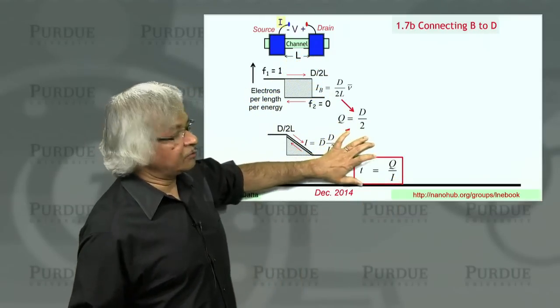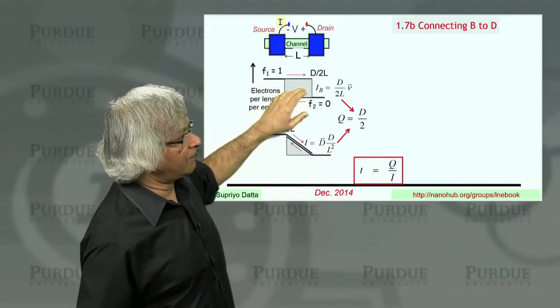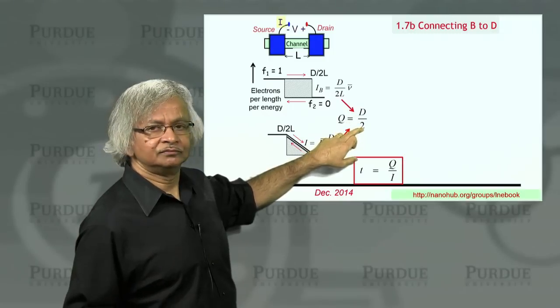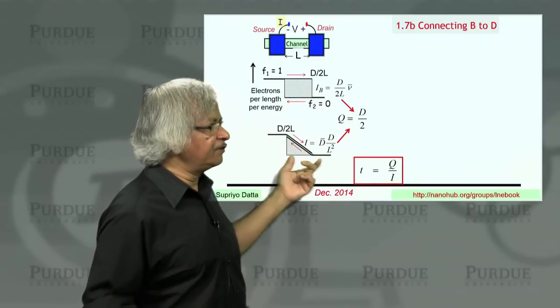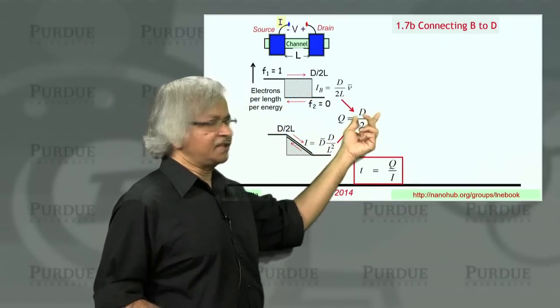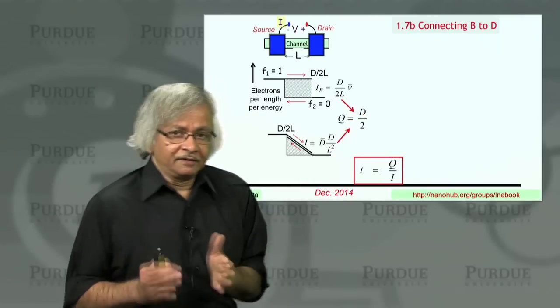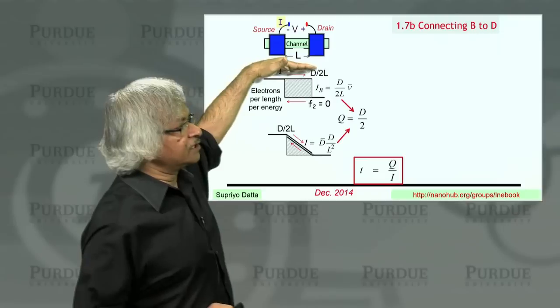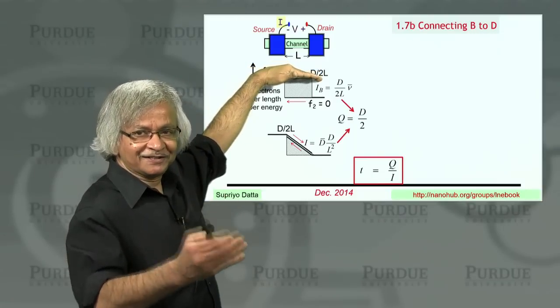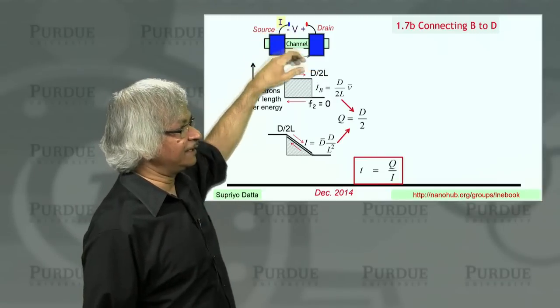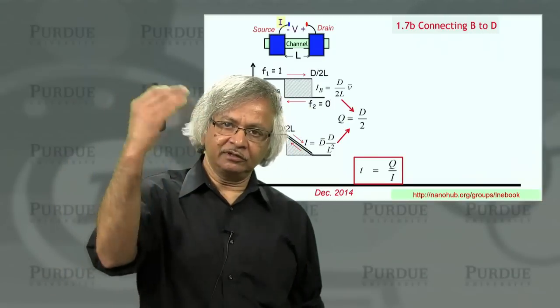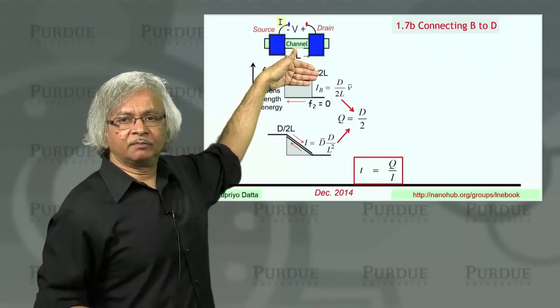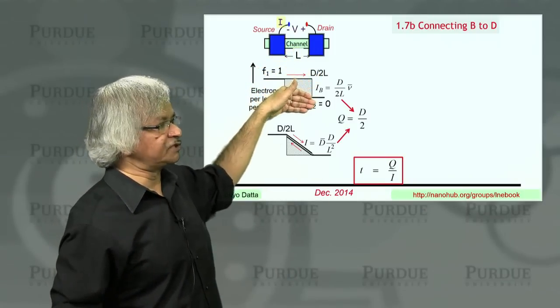Based on that, what we saw was for ballistic transport, the amount of electrons stored in here was this D over 2. Interestingly, even in the diffusive limit, the answer is still the same, D over 2. The only difference is that in the first case, all the electrons are in the northbound channels. You can think of this channel as having half the states that are northbound, the other half that are southbound. In the ballistic case, all northbound states are filled, all southbound states are empty.